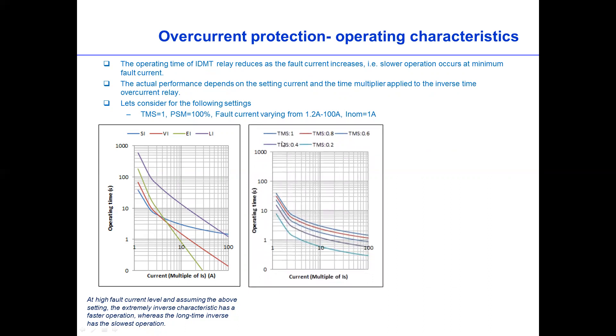And then another scenario is we can vary the TMS value from 1 to 0.2. The aim of this one is, for example, at maximum at 100 amp for the current, initially when the TMS was around 1.5, but when it is lowered to 0.2, we can look at the trip time becoming now around 0.2 seconds. So that means this is faster now. So we can use the TMS value for increasing or reducing the fault clearing time.